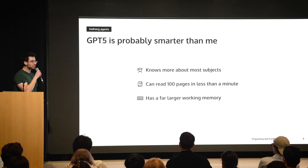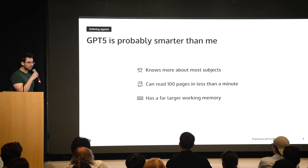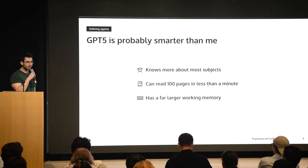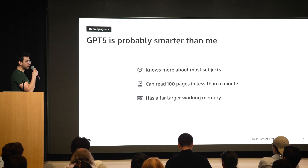It being smarter than me — I wasn't kidding. I would actually argue that GPT-5 in many ways is probably smarter than me. It knows more about most subjects. It can read a hundred pages in less than a minute. It has a far larger working memory than I do. To understand working memory, think about a waiter going to a table and taking everyone's orders without writing them down — maybe seven orders, which is somewhere in the order of a couple hundred tokens. GPT-5 has a 400,000 token context window. It can keep a lot more in its working memory than we can. It almost certainly can write a better Python script than I can. GPT-5 just got 11 out of 12 on the gold IMO, so it's smarter than me at literally everything.